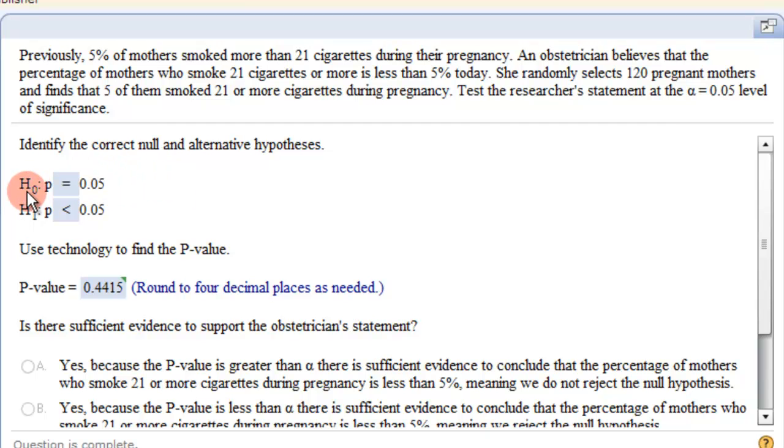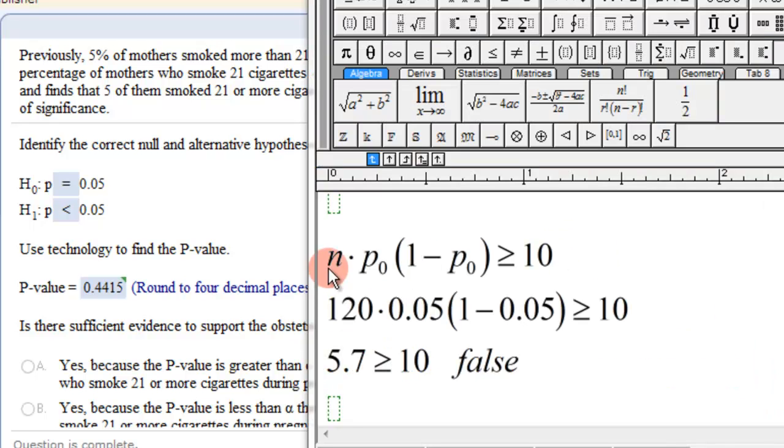So we set up our hypothesis. It was said that 5% smoked at the beginning, and now we want to say less than 5% smoked. So we have to look at our greater than 10 thing. So here's our inequality that has to be true in order to use a normal distribution. And it happens to be false this time.